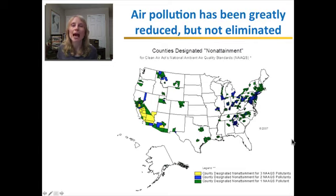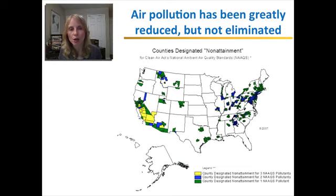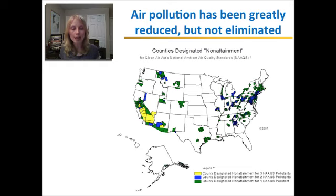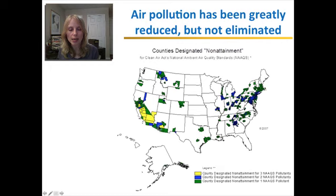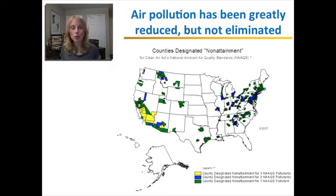Our air pollution has been greatly reduced, but unfortunately not completely eliminated. Here's EPA data showing parts of the country where at least some of the main air pollutants are above allowable levels. Yellow areas have at least three main pollutants above the limits, blue areas have two, and green areas have just one. It is an issue we still need to pay attention to and continue improving.